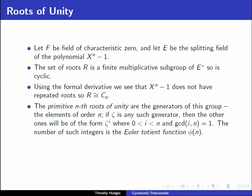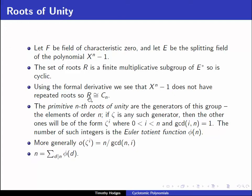The primitive nth roots of unity are then defined to be the generators of this group, the elements of order n. Notice that if zeta is any such generator then the other ones will be of the form zeta to the i where i is between 0 and n and is relatively prime to n. The number of such integers is usually denoted phi of n, the Euler totient function. The order of zeta to the i by elementary group theory is n divided by the gcd of n and i. So since R is the disjoint union of all the primitive dth roots of unity for d dividing n, and since the number of primitive dth roots of unity is phi of d, then n is the sum over d dividing n of phi of d.